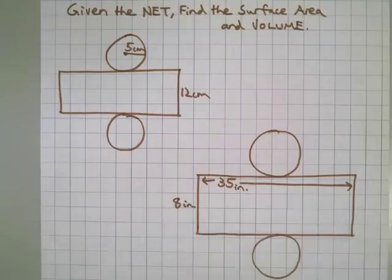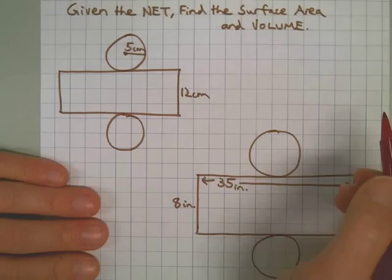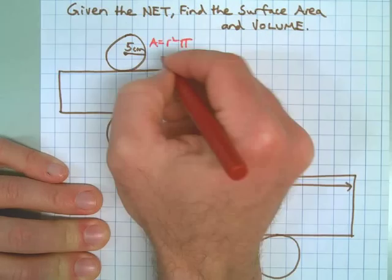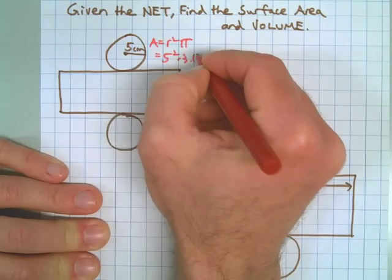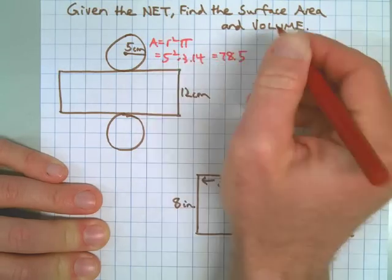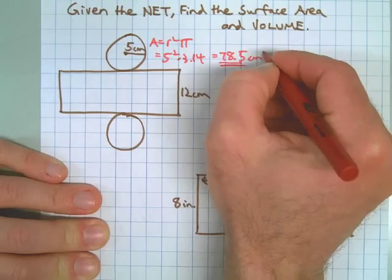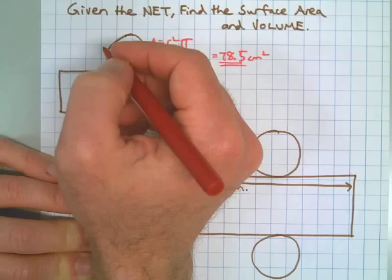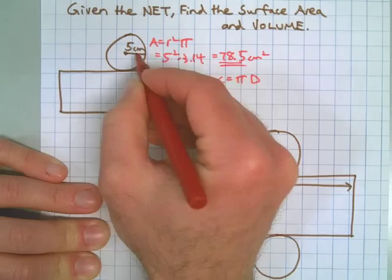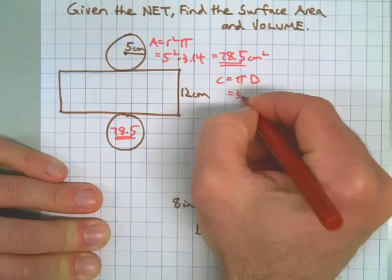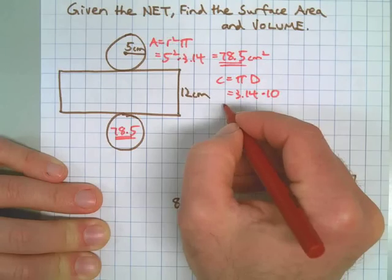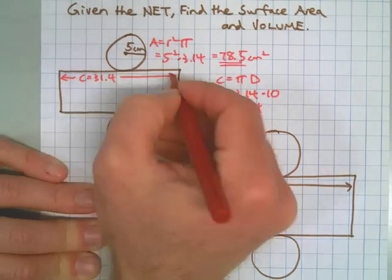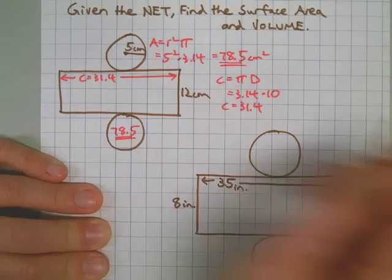Welcome back. I'll work a little more quickly this time. Let's find the area of the base: r squared times pi. The radius is 5, so that's 25 times 3.14. I'll label that base area on the net. Now if the radius is 5, the diameter is 10. Circumference equals diameter times pi: 10 times 3.14 equals 31.4. I'm labeling it on the net, making the connection between the edge of the rectangle, the edge of the lateral face, and the circumference of the base.